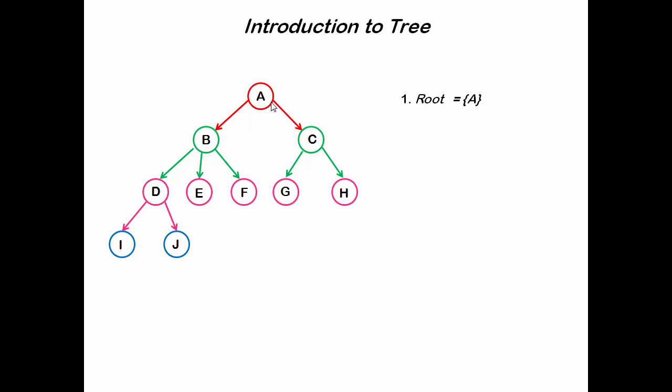Each node contains the link of other nodes called children of that node. Here, A contains the links of B and C. So B and C are the children of A. Now node B has three children: D, E, and F.